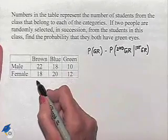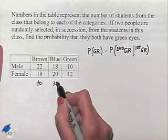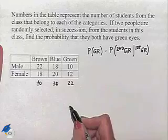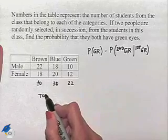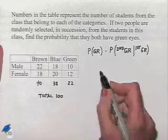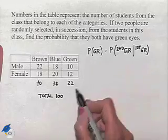Well we can add together and notice we have 40 with brown eyes, we have 38 with blue eyes, and we have 22 with green eyes. That's giving us a total of 100 people. So the probability that we choose someone with green eyes is going to be 22 out of 100.